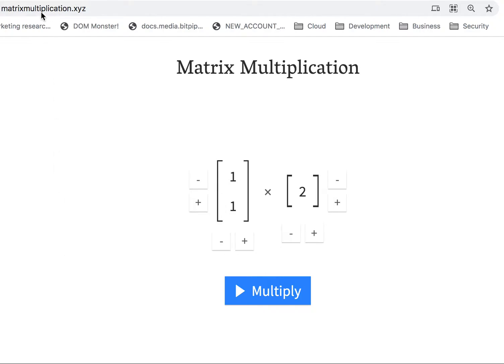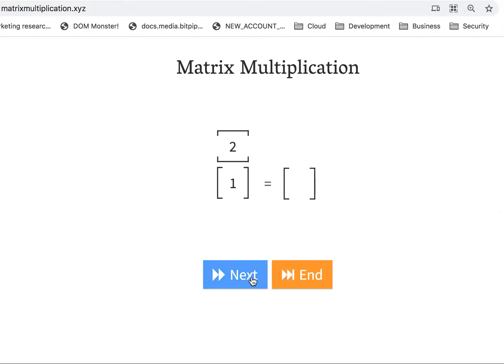There's a great site called matrixmultiplication.xyz if you want to try these experiments yourself. So let's start with a single element matrix, which is 1 times 2, and you know what the answer is. That should be pretty easy for you, which is 2.